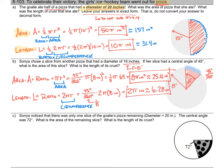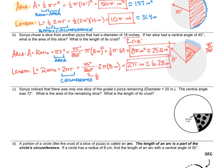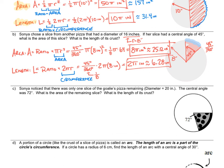Let's move down to part C. Sonia noticed there was only one slice left of that mega goalie pizza with a diameter of 20 inches — reminder, that means the radius is 10 inches. The central angle was 72 degrees. What is the area of the remaining slice, and what is the length of the crust? We can rip through this one because we've done it a couple of times already.